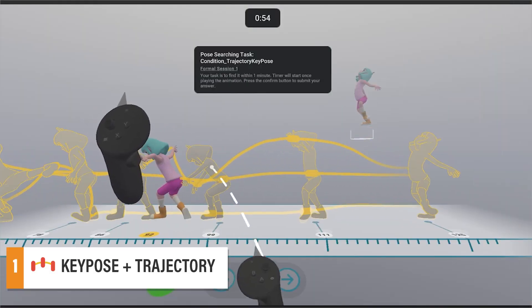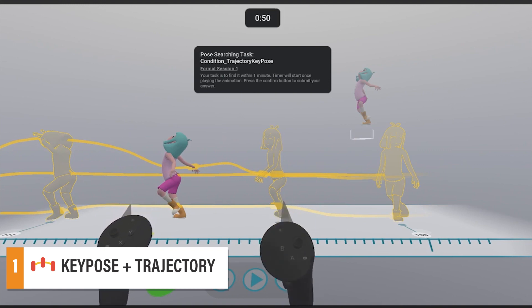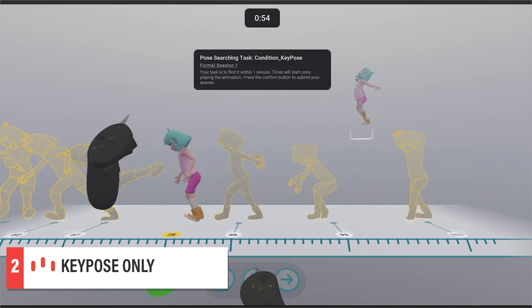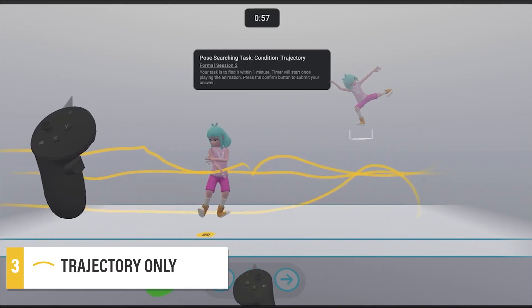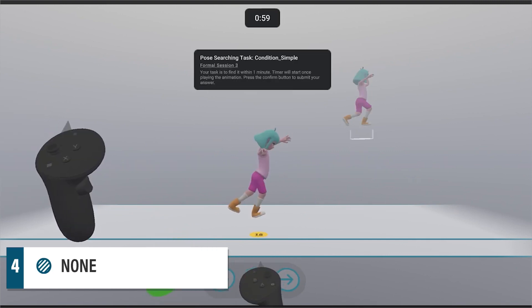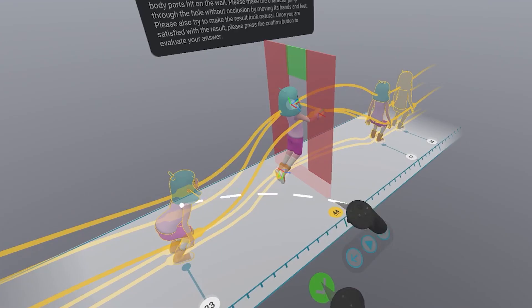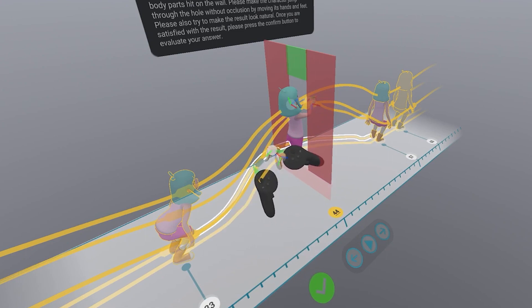The study included a pose searching task where participants had to find a pose in the timeline. In the pose manipulation task, participants had to manipulate the character so that it goes through an obstacle.